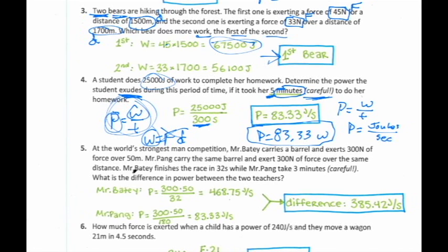Let's take a look at number five. Number five we know is just dead wrong, because I'm sitting here in a World's Strongest Man competition, which I'm far from, but it makes me feel good about myself. So World's Strongest Man competition, there's me carrying a barrel that exerts 300 newtons of force over 50 meters. Mr. Peng carries the same barrel, that exerts 300 newtons of force over the same distance, also 50 meters. I finish in 32 seconds. Well, he finishes in three minutes. What's the difference in power between the two teachers?